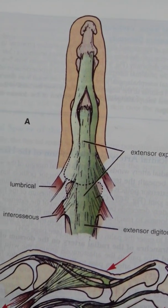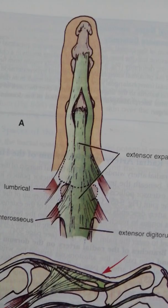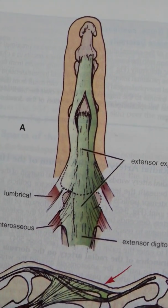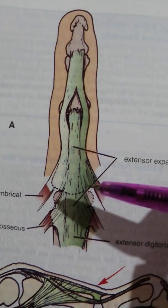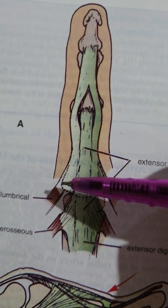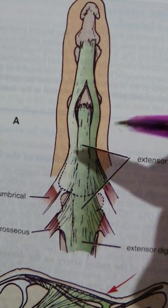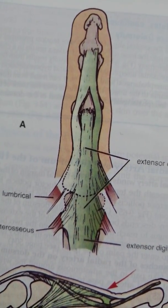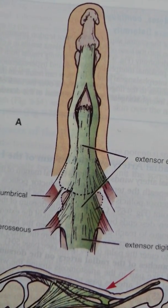Now let's talk about extensor expansion. So what is the extensor expansion? The extensor expansion is a triangular aponeurosis located over the dorsum of the proximal phalanx.